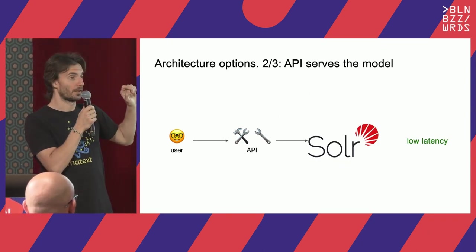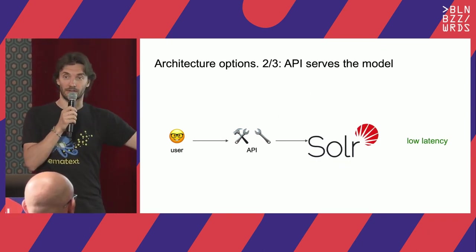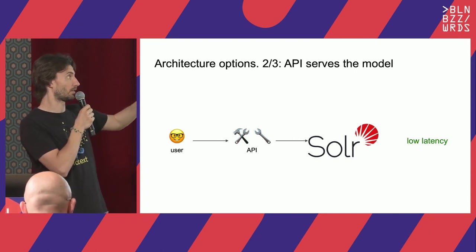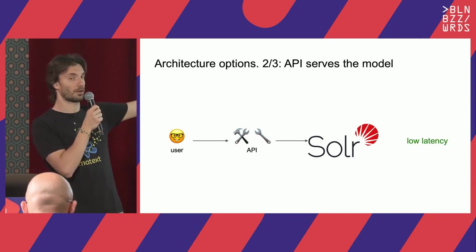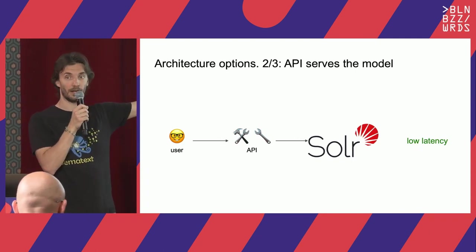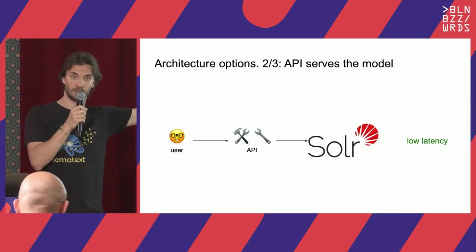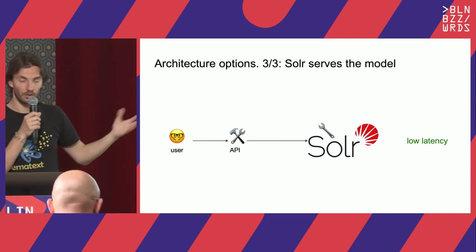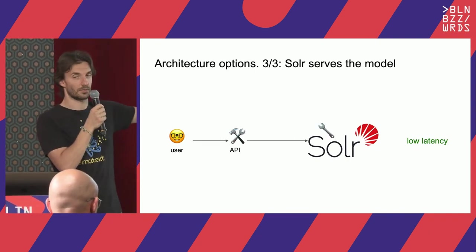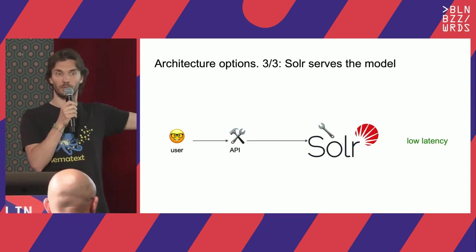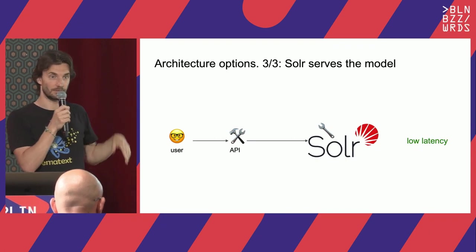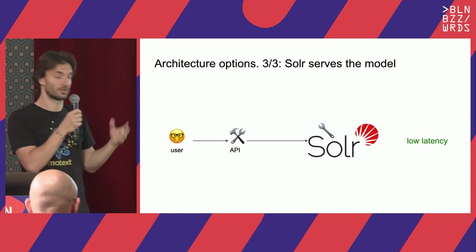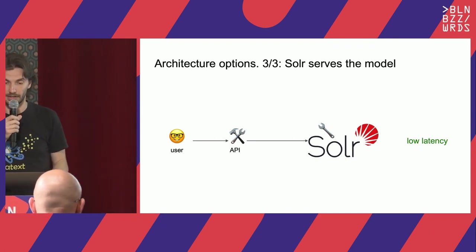To avoid that extra latency, you can do two things: you can either serve the model directly in your API, so you'd be closer to the business logic, or you can serve it from Solr — which is what we're going to look at today. Then you'll be closer to the data.